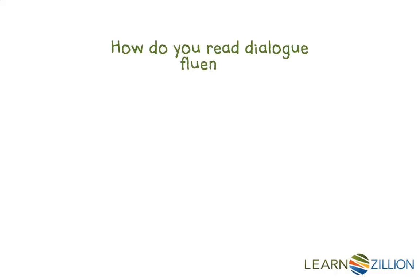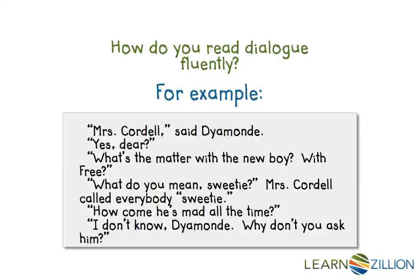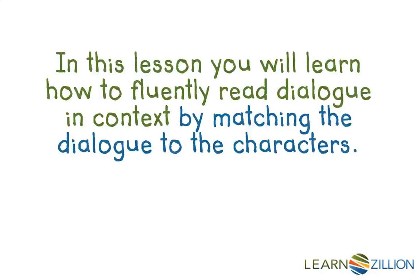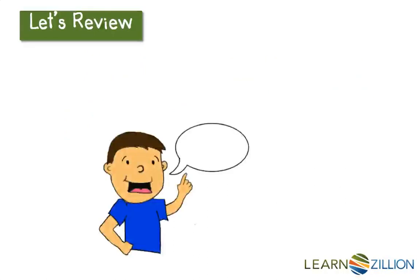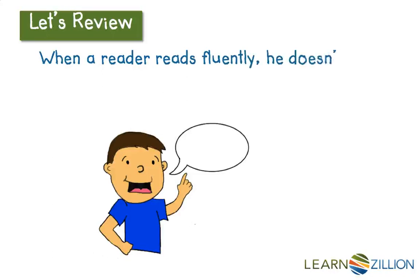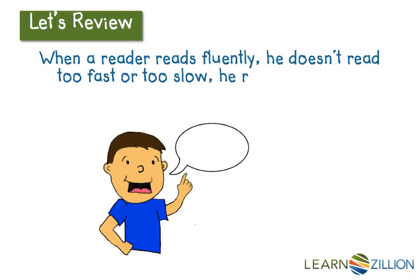How do you read dialogue fluently? For example, like in this passage. In this lesson, you will learn how to fluently read dialogue in context by matching the dialogue to the characters. Let's review. When a reader reads out loud fluently, he doesn't read too fast or too slow. He reads all of the words correctly, and he makes his voice sound smooth and expressive.